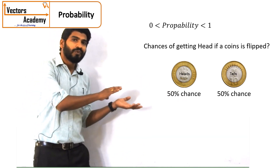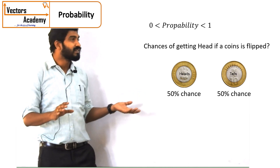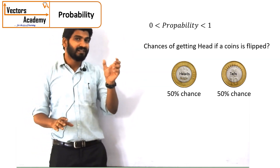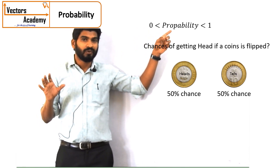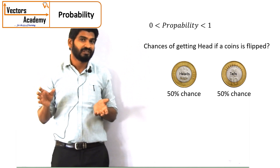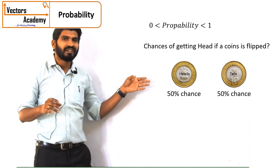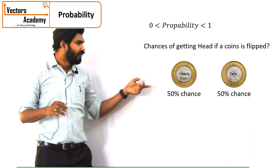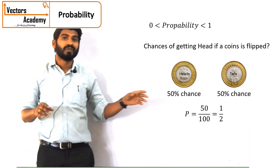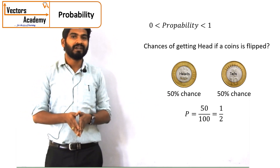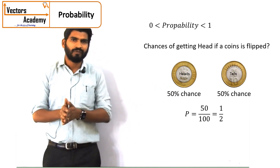The chances of occurrence can be expressed in terms of probability. Probability is always expressed on a scale from 0 to 1. 1 means 100 percent chances of occurrence, 0 means 0 percent chances of occurrence. In this case, it is 50 percent, that is 50 upon 100, that is 1 by 2. So half is the probability of the coin showing heads and half is the probability of the coin showing tails.